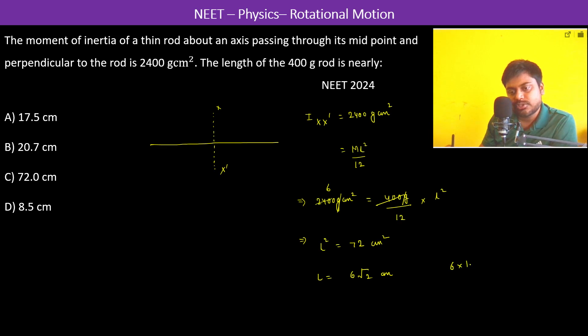Now almost equal to 6 into - what is root 2? Root 2 is 1.43, so almost 1.4, so 8.4, almost equal to 8.5 centimeter.